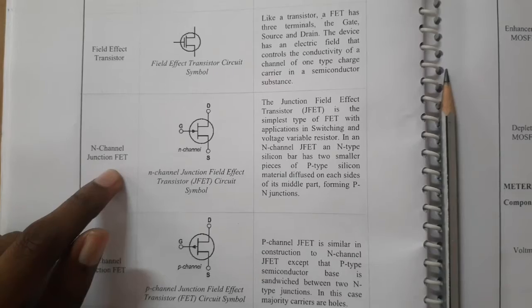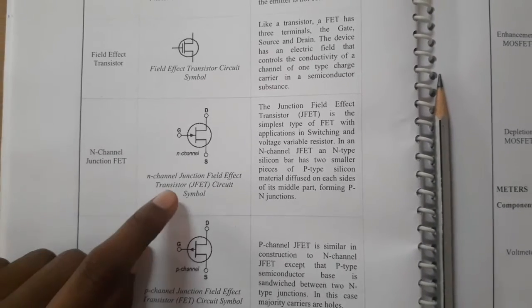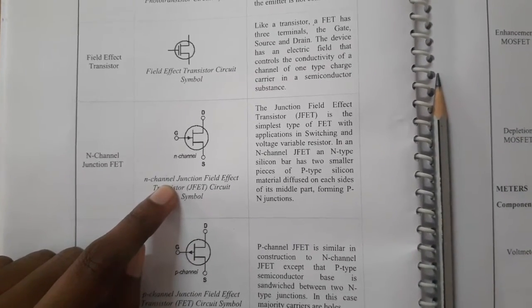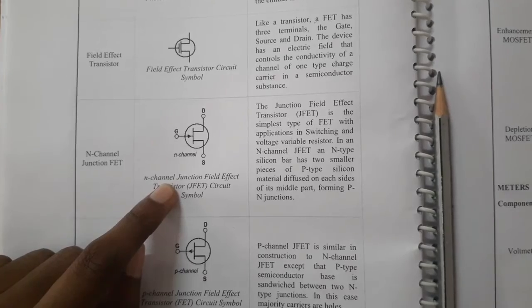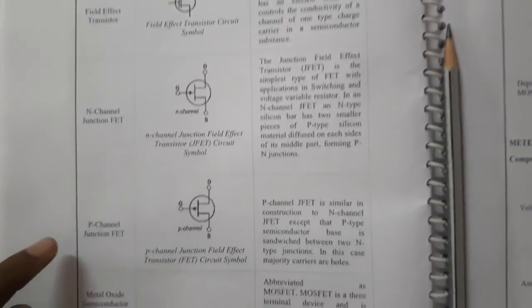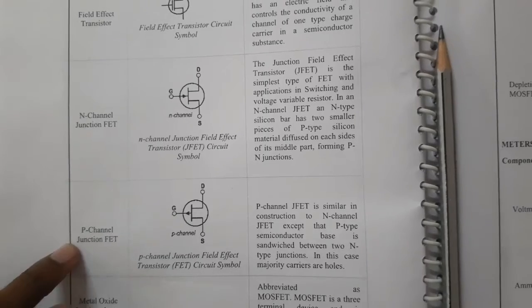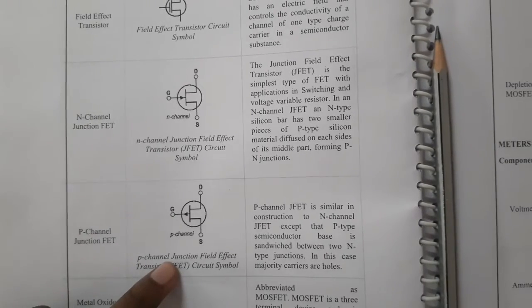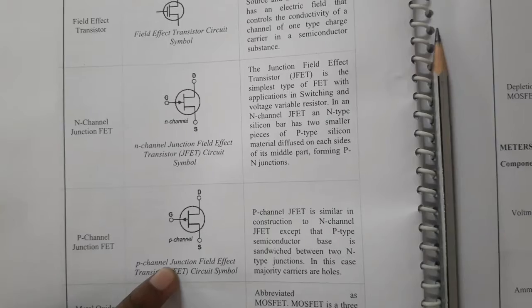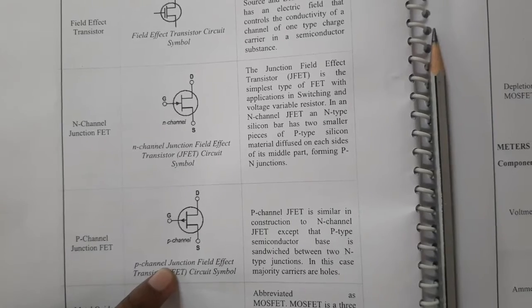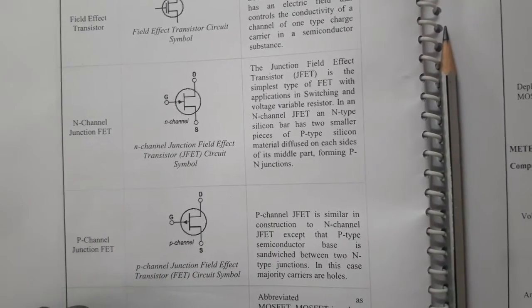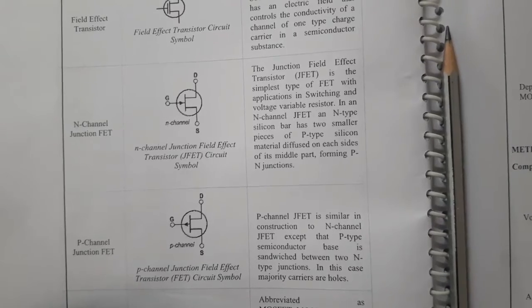Next is the N-channel junction FET — this is the symbol. Its applications include switching and voltage variable resistance. P-channel FET — this is the symbol. The difference in the P-channel junction FET is that a P-type semiconductor base is sandwiched between two N-type junctions.